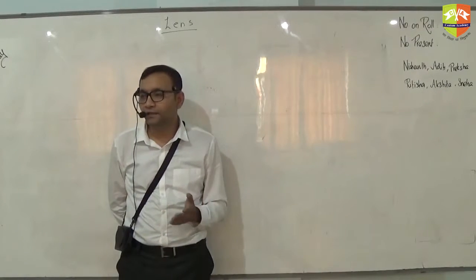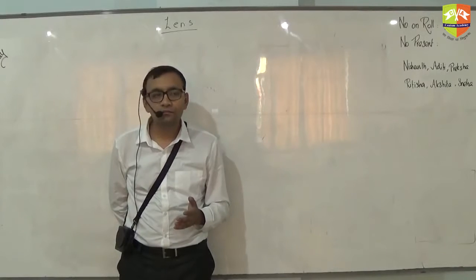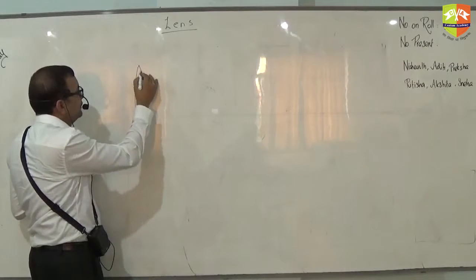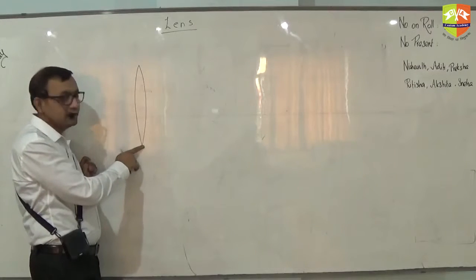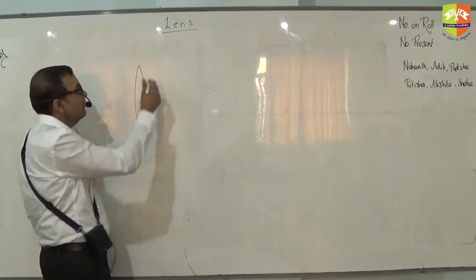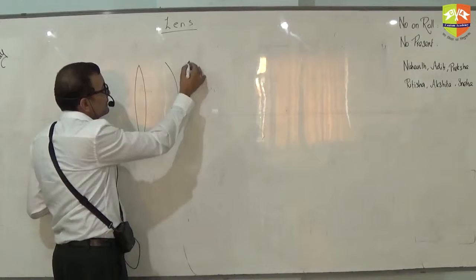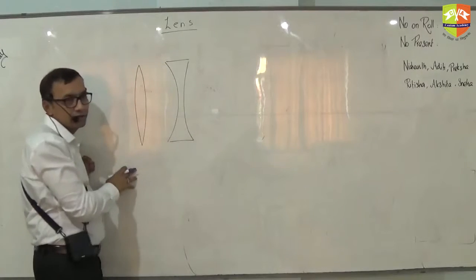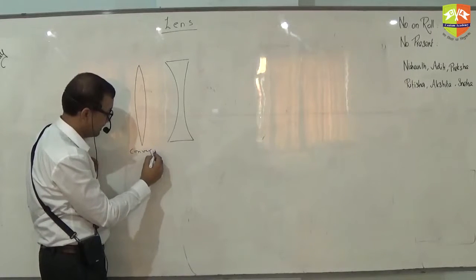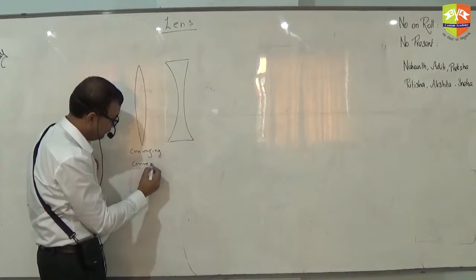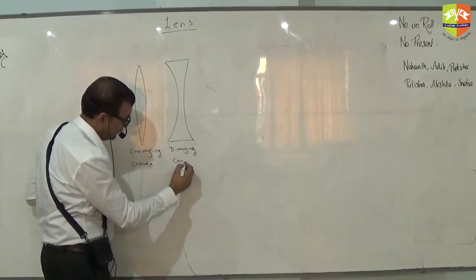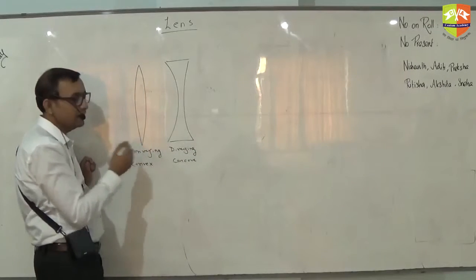Do you know how many types of lenses are there? This is convex lens, also called as double convex lens. This is concave lens. This is also called converging lens and this is also called diverging or concave lens. Why is it called diverging and this is converging? Because this diverges the parallel rays and this converges the parallel rays.